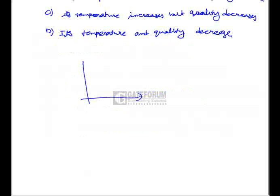Consider the PH diagram. For a constant enthalpy process from state 1 to state 2, the wet steam flows through the throttle valve and remains wet at exit. The representation of this throttling process has a starting position and an ending position on the diagram.